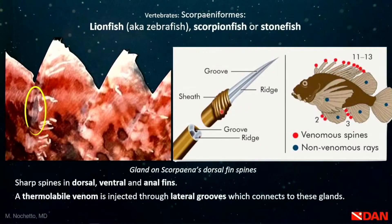Not all fins have these structures, but some do. Regarding the venom itself, it is thermolabile — we can break it down with heat. That is one of the key points going forward: many first aid measures involve the application of heat. By the end, you'll understand why we sometimes apply heat, why sometimes it doesn't make sense, and why sometimes we try other strategies.